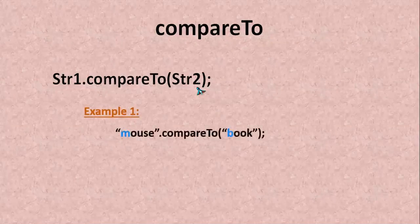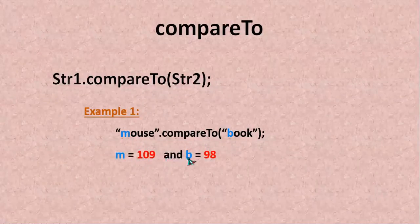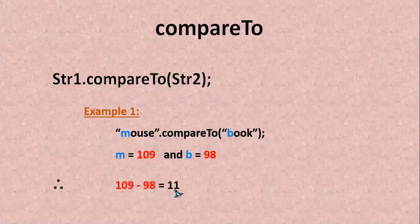Here we use the first string dot compare to the second string inside the bracket. For example, I have mouse is the first string value dot compared to the second string value here as book. Here see the first letter of this is m and the first letter is b here. The ASCII value of m is 109 and ASCII value of b is 98. The difference between these going to be given. That is 109 minus 98 is going to be 11. In case here it is book and here it is mouse it is going to do 98 minus 109. That is going to be minus 11.